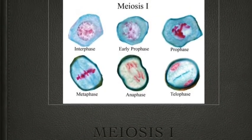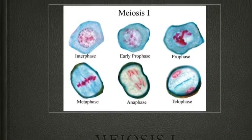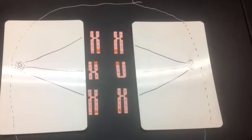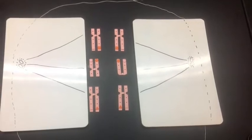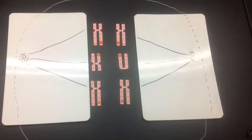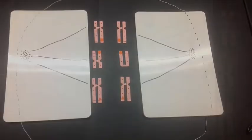Meiosis I. In prophase I, the DNA coils tightly and individual chromosomes become visible. Homologous chromosomes become closely associated in synapses, and they exchange segments by crossing over.